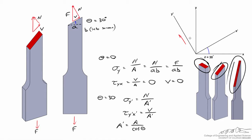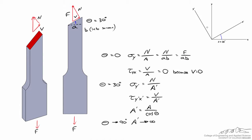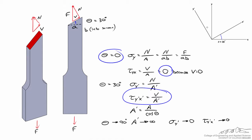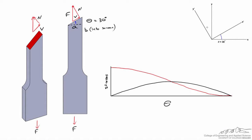As theta increases, the surface area gets larger and larger. In the limit of theta equal to 90 degrees the surface area becomes infinite, provided the sample is infinitely large — geometrically, as theta approaches 90 degrees, cosine of 90 goes to zero, so A-prime goes to infinity. Because A-prime is so large when theta approaches 90 degrees, sigma_y-prime approaches zero since A is in the denominator, and tau_y-prime-x-prime also approaches zero. Interestingly, when theta is zero the shear stress is zero, at intermediate theta it has an intermediate value, and as theta approaches 90 degrees the shear stress again becomes zero because the surface area is so large.